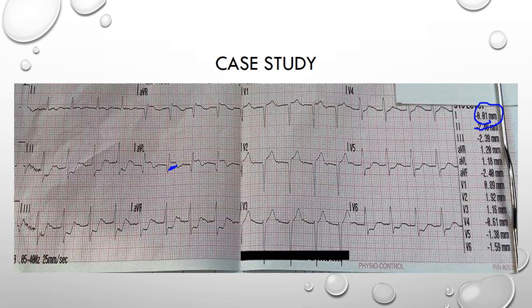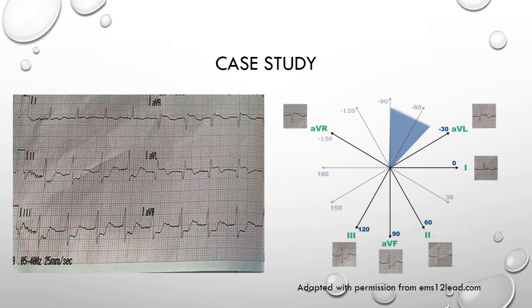So could this just be considered a high risk ACS? To understand the relevance of reciprocal ST depression we need to understand the axis or vector of ST elevation, and to do that I am just going to focus on the limb leads for now.